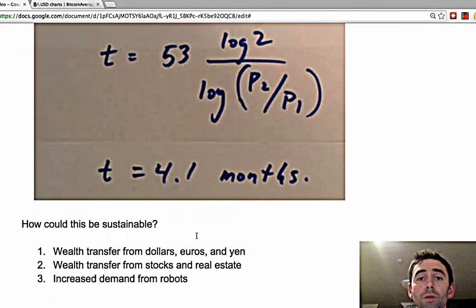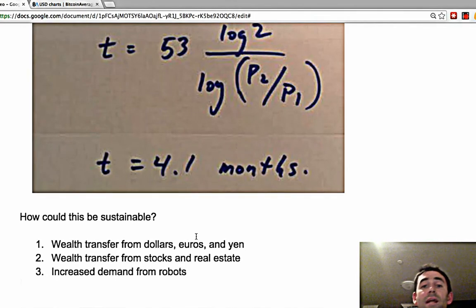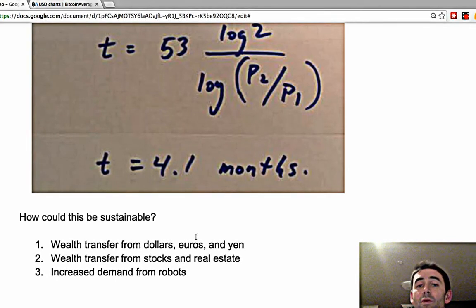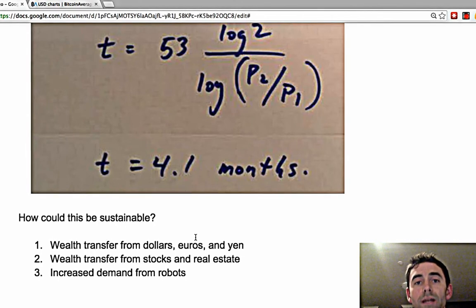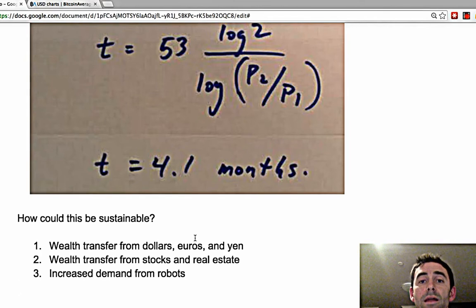I'll give you three reasons. One, we're gonna see a huge transfer of wealth from dollars, euros, and yen to Bitcoin as more and more people learn about Bitcoin and what makes it an objectively better money than commonly used money.